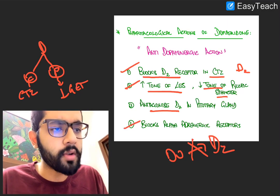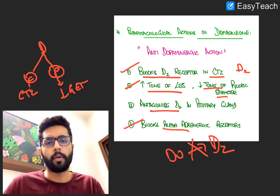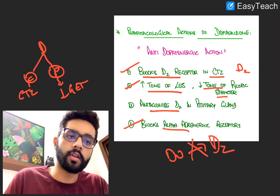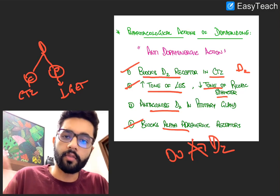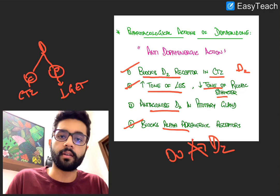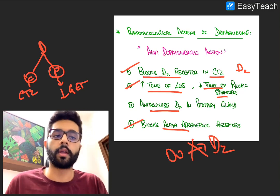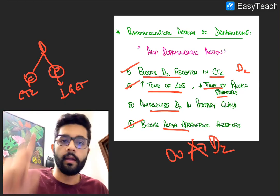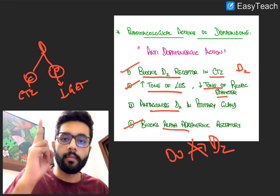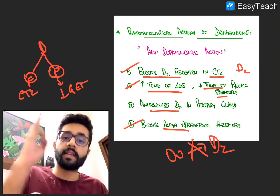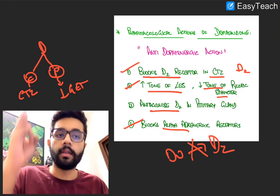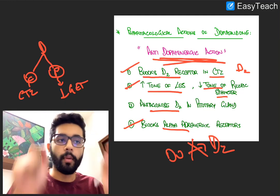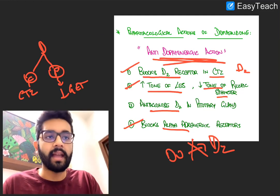Domperidone also has some alpha-adrenergic blocking property. In an adrenergic or sympathetic state, there is reduced gastric and intestinal motility, so blocking alpha-adrenergic activity improves motility. The three key things to remember: it acts by blocking D2 in the CTZ, it reduces the tone of the pyloric sphincter, and it antagonizes dopamine in the pituitary gland. In brief, domperidone has a potent anti-dopaminergic action.